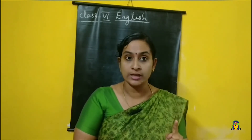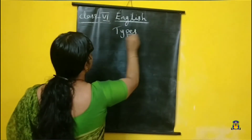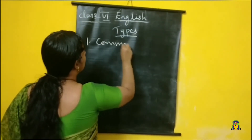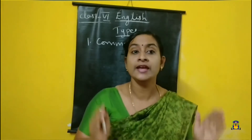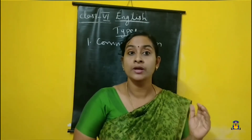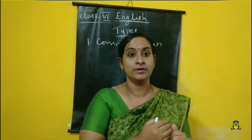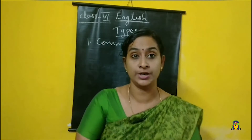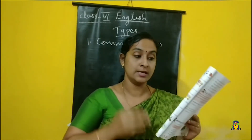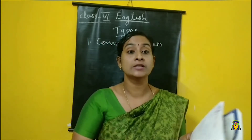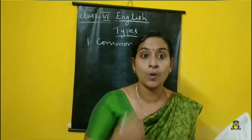The first type of noun is common noun. In the name itself, we can understand a noun given to a name, place, animal, thing in common to one kind — that is common noun. It is the name given to all the persons, places, animals, things of one kind. For example: city, girl, boy.